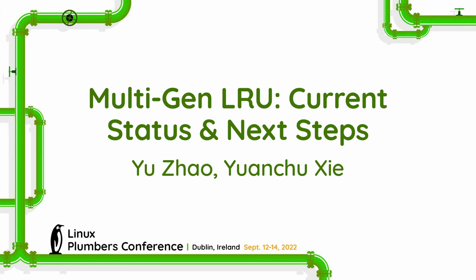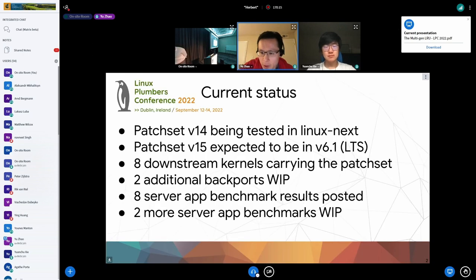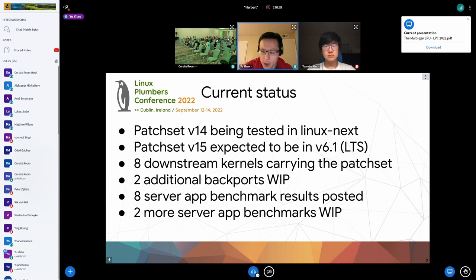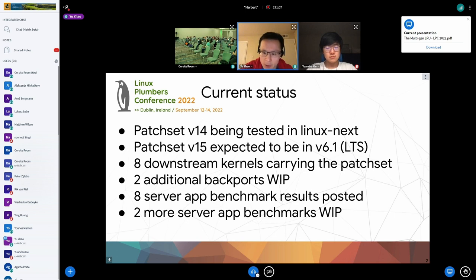Let's move on to the current status of MGLRU. We have patch set 14 currently being tested in linux-next, and patch set 15 is expected to be in 6.1. We have eight downstream kernels that have been carrying the patch set, and two additional backports working in progress for Raspberry Pi and WSL2 on 5.15 kernels. We have also posted each server benchmark, with two more in progress, and we are working on JavaScript and JVM benchmarks.